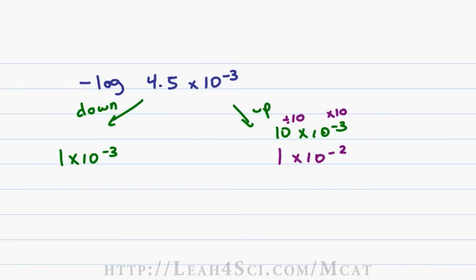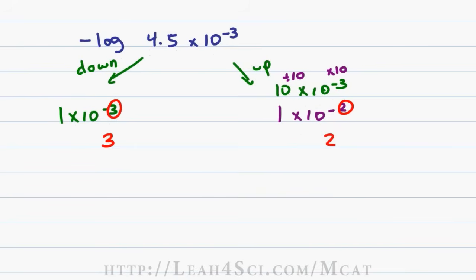Now I can solve for the negative logs. 1 times 10 to the minus 3 gives me 3. 1 times 10 to the minus 2 gives me 2. And so if this was an H plus concentration, my pH would be somewhere between 2 and 3. This is where you want to be careful. 4.5 seems like the halfway between let's say 4 and 5 but it's not going to be the halfway between my pHs. This is where you have to make a decision.